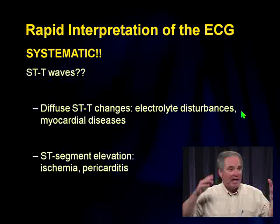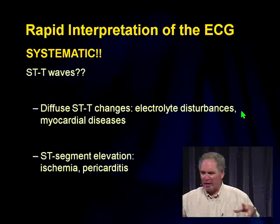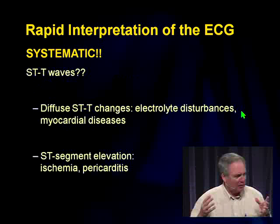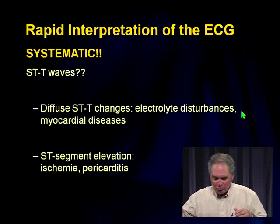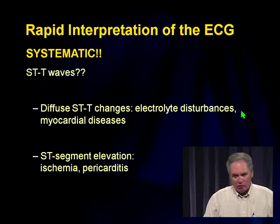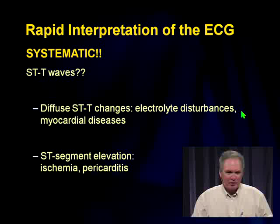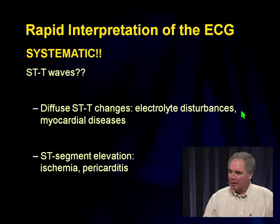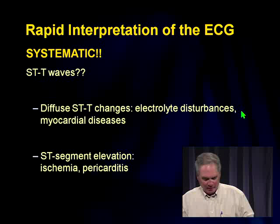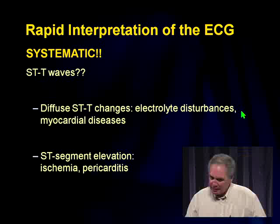Then I look at the ST and T waves to make sure they look normal. If I see diffuse ST-T wave changes, I think about electrolyte disturbances or myocardial disease. ST elevations suggest ischemia or pericarditis. I look at each segment of the electrocardiogram systematically.